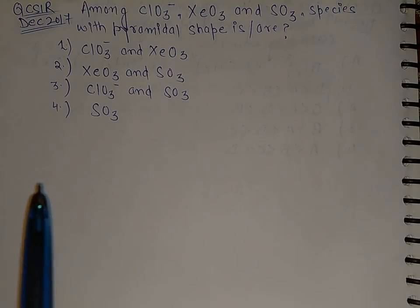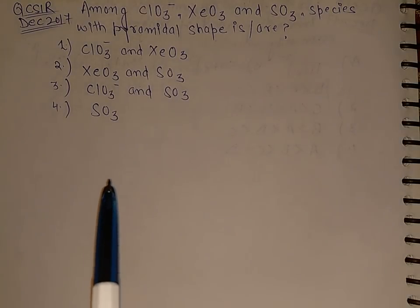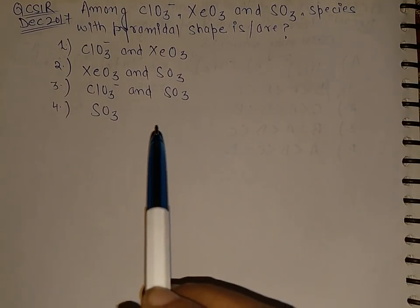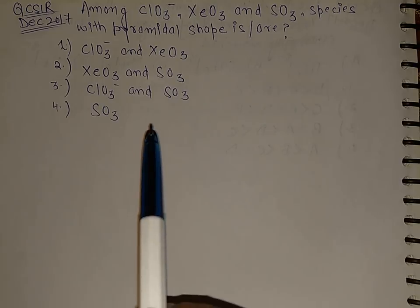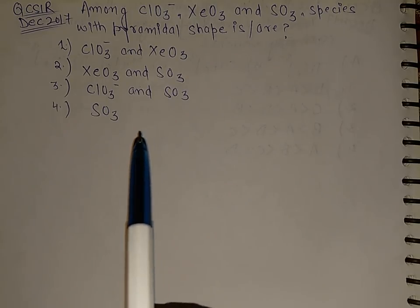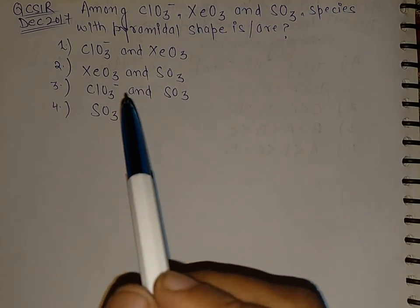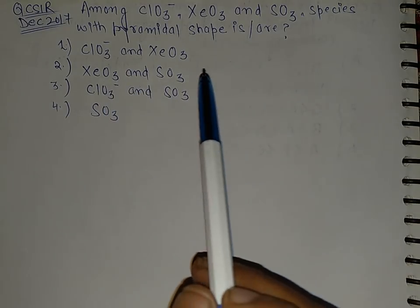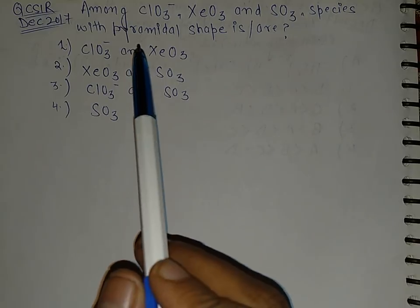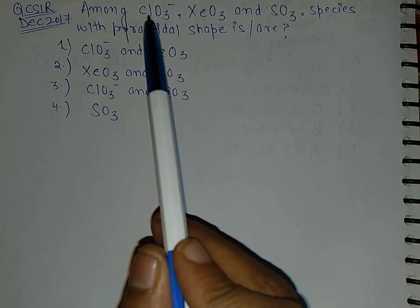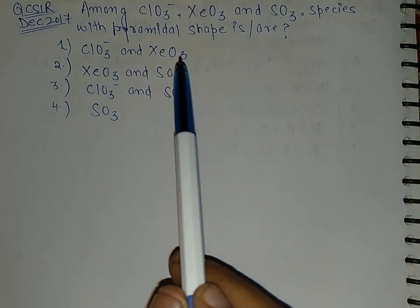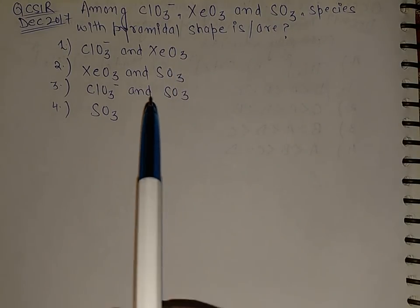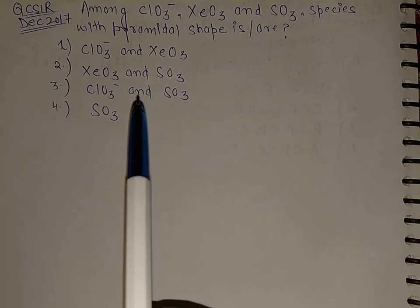Hello everyone. This question came today in the CSIR December 2017 exam. So many questions came from the chemical bonding portion, and this is one of them. We have been asked to identify which of these species have a pyramidal shape. This is a very easy question and will hardly take two seconds.